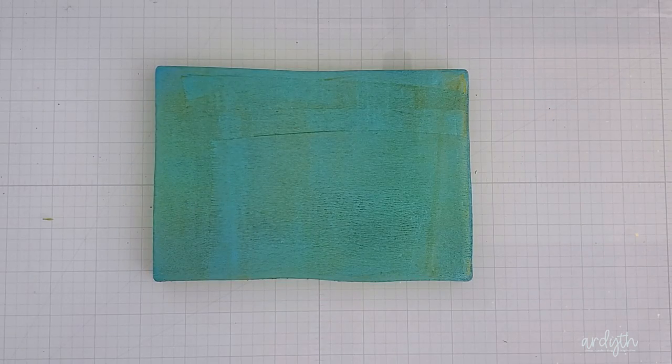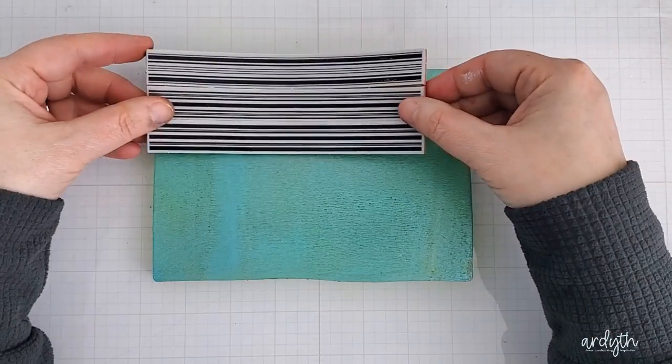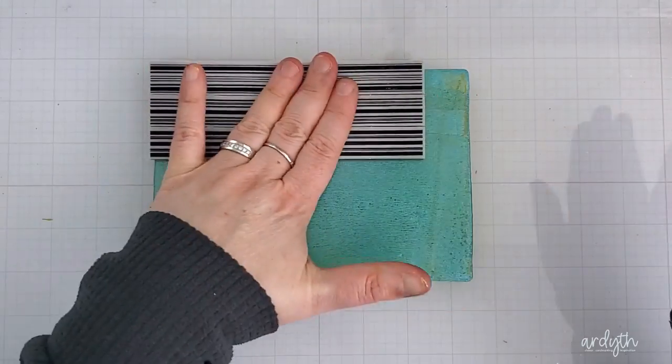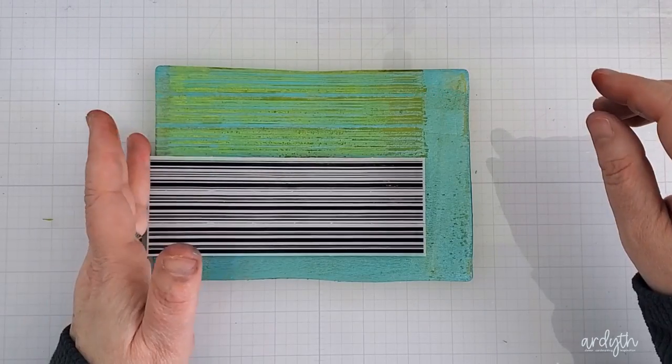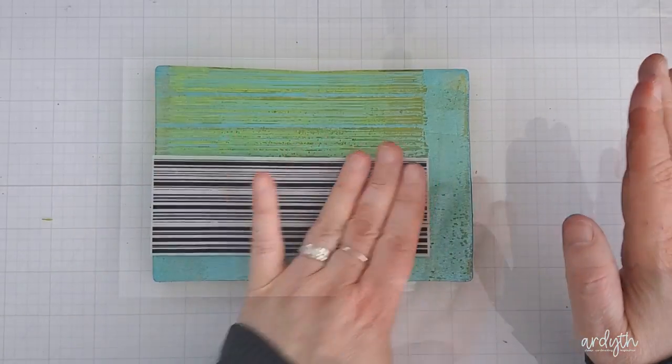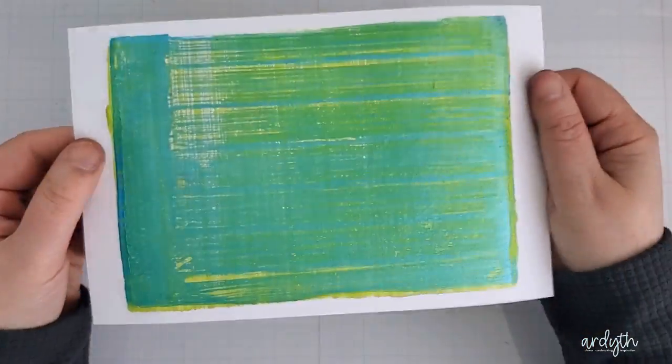I think that's really pretty and it does give a lot of texture. Next I did the same thing with my blue paint, but this time I made the lines go the other way on the gel plate. Now it looks like I'm removing quite a bit of paint here, so I was pretty hopeful for the results, but I think because the paint is quite opaque, when I pulled it I had a mostly blue stripey panel.